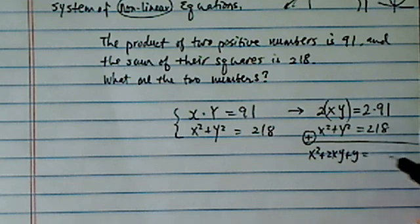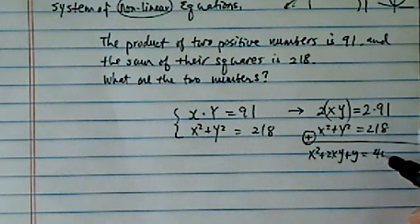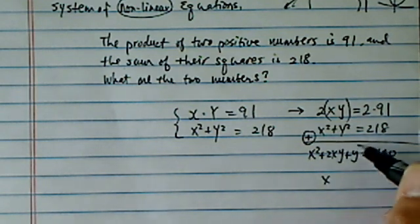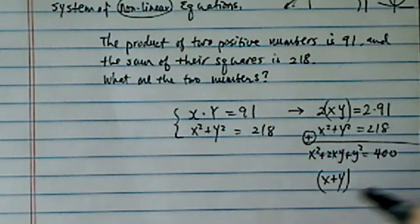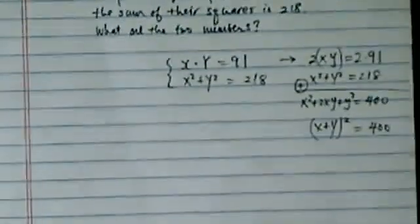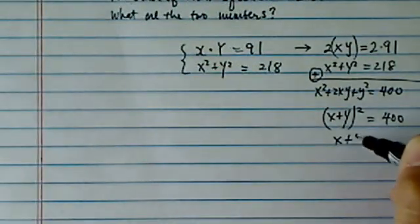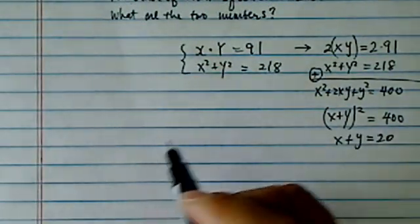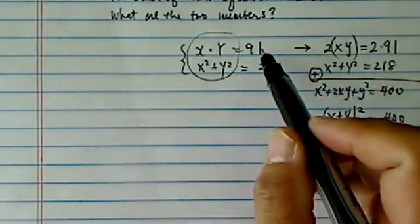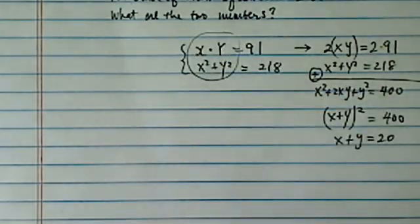you can see on the left hand side you have a very easy and interesting equation in that it's a square, sum of square. This one does give us a little easier equation to deal with than if you were trying to multiply this and put it in there, substitute it.